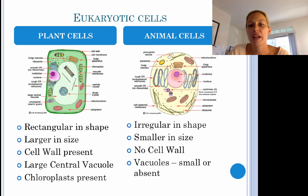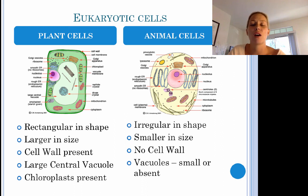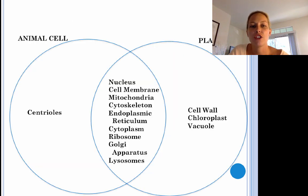Just to recap: there are two main eukaryotic cell types — plant cells and animal cells. Plant cells are rectangular or square in shape, usually larger in size, and contain a cell wall, a large central vacuole, and chloroplasts, whereas animal cells do not. Animal cells are circular or irregular in shape, usually smaller, don't have a cell wall, and their vacuoles are either very small or completely absent. A Venn diagram shows that most structures are found in both, but cell wall, chloroplasts, and vacuole are only in plant cells, while centrioles are only in animal cells.